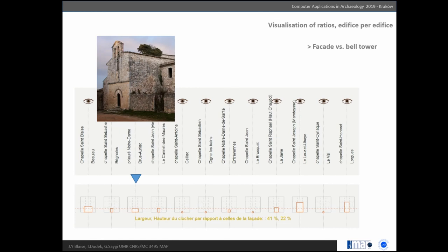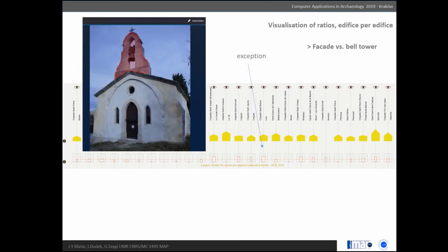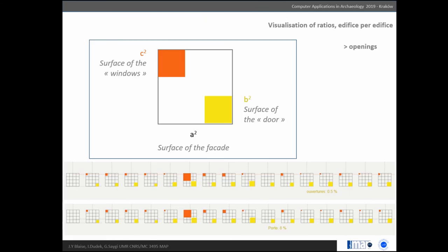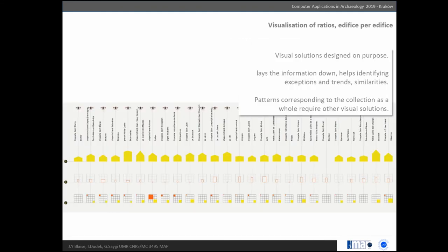The third line: the square represents the surface of the facade, and the surface of windows and doors are represented with colored squares. This is an exception. These three help reading one edifice after another but don't help reading the collection as such.